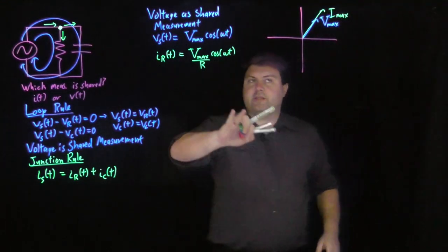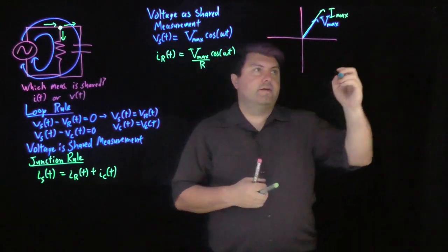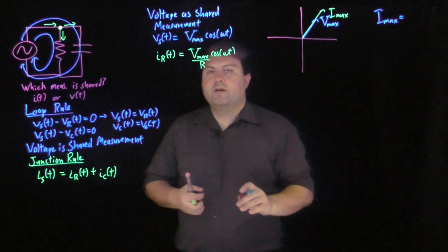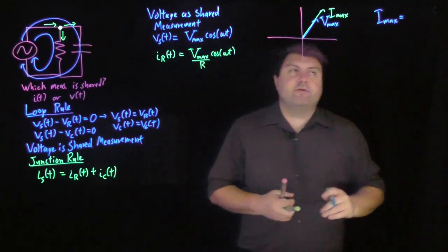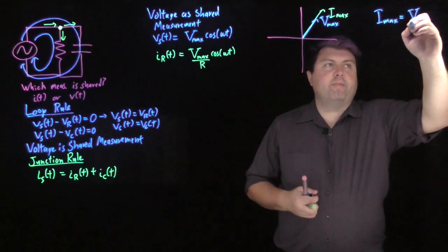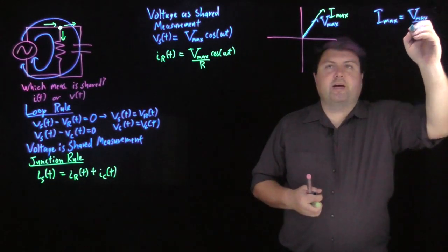And we can look at this Imax. So right, our cosine is what changes. This is what's going to change. And our Imax is going to be, as we expect from Ohm's law, Vmax over capital R.